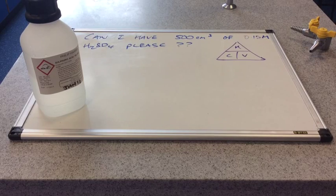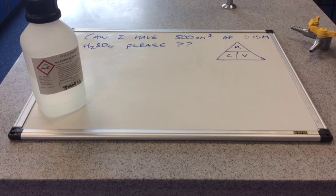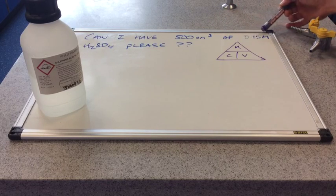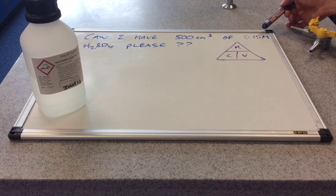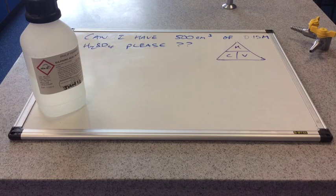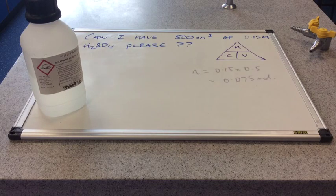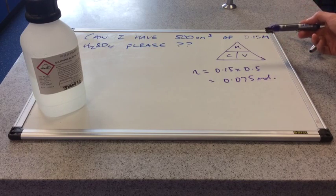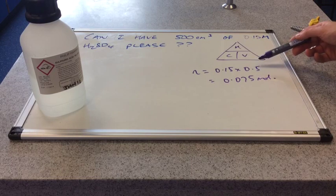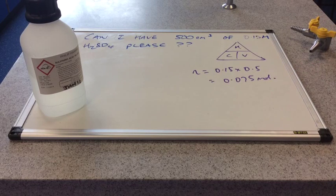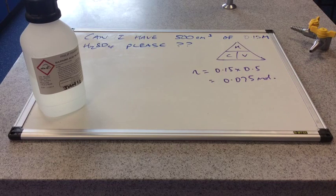There's the formula triangle that we need to use. So we know that we want 500 centimetres cubed, so that's a volume, of this particular concentration of sulphuric acid. So if we know the concentration and the volume, we can work out how many moles we need to be in that solution. So that's our first port of call. And that's how many moles we're going to need then. So it's the concentration, 0.15, multiplied by the volume in decimetres cubed, 0.5. So we need 0.075 moles of sulphuric acid. So where are we getting those from? We're getting them from here.